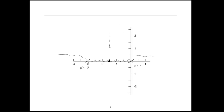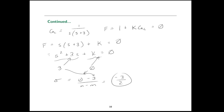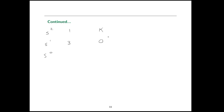Let's check for imaginary axis crossings using the Routh array on the characteristic equation s squared plus 3s plus k. Forming the array: the third row entry would be (3k minus 0) over 3, which equals k. We look for a value of k that makes an entire row zero, which would give an auxiliary equation — but there is none. So we can conclude there is no imaginary axis crossing.